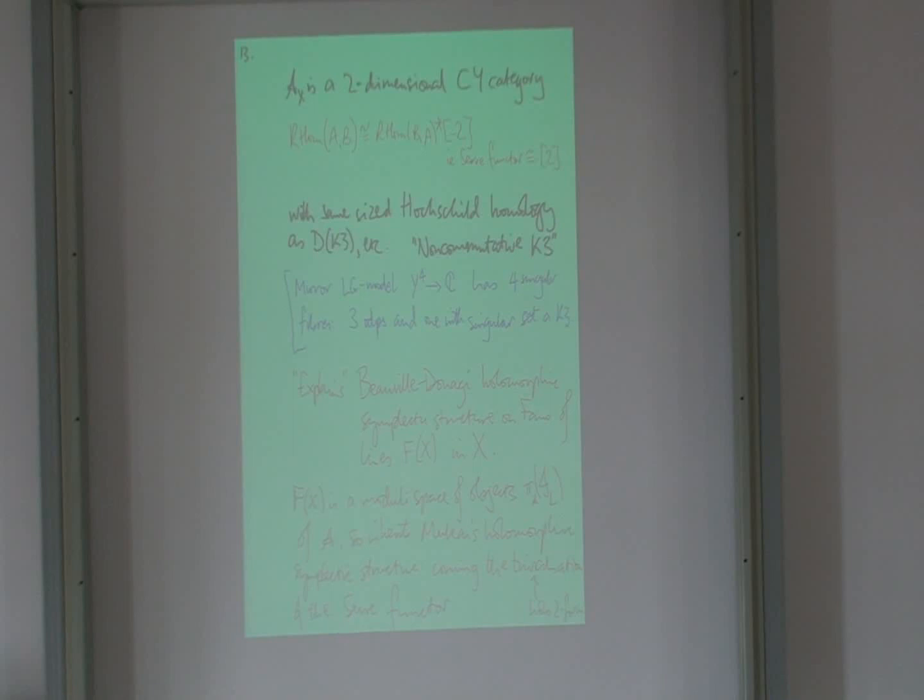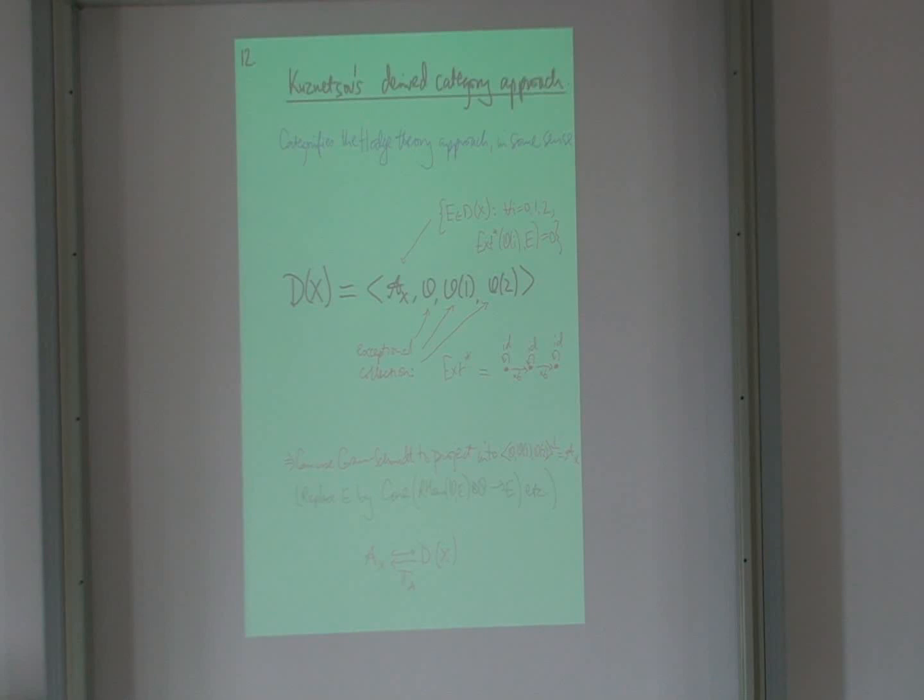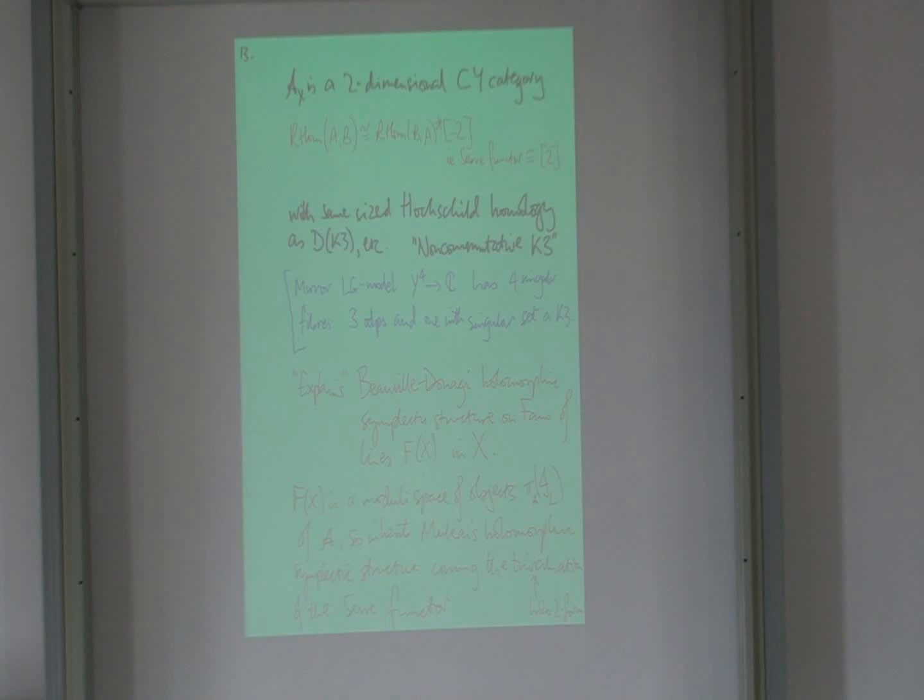Presumably, there's a mirror physics explanation for this. I mean, the LG model has four singular fibers, so three points. That's just these three. You know, their X-tors look like the structure sheaf of a point in zero dimensions, so inside the point, not in the fourfold at 3. So it looks like three points, and another fiber with a singular set of K3 surface, which is presumably mirror to this non-commutative picture. Oh, that's not looking at me, Sam.